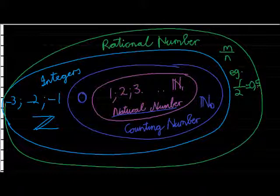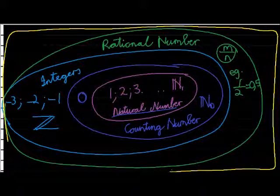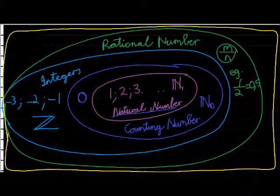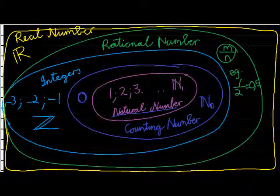If we get rational numbers, it means we also get numbers that are not rational — numbers that cannot be written as a fraction. Those numbers are called irrational. All the numbers in the real world are called real numbers, and the symbol we use for real numbers is an R with a double line at the back.